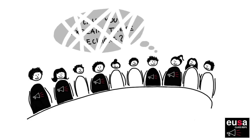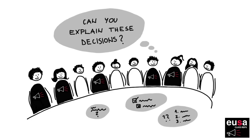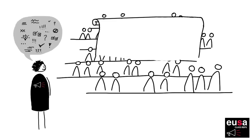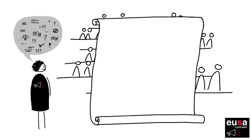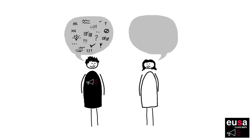You should also ask those in the meeting to have clear explanations of why decisions are being taken so you can pass on that information to your peers. After the meeting, it is important to share the outcomes with the students you represent. You can do this verbally, by email, by commenting on USAY or on social media. It's important to use more than one of these methods to reach as many students as you can. You should also feel able to follow up with staff if the agreed changes are not being delivered on time or as you expected.